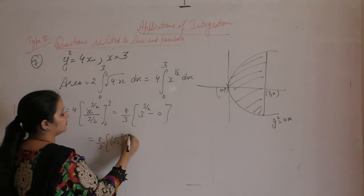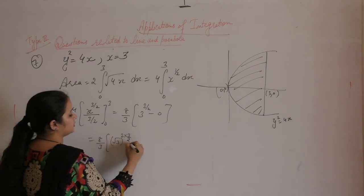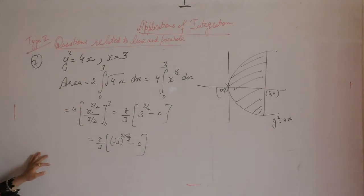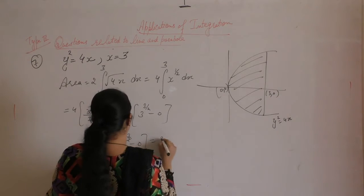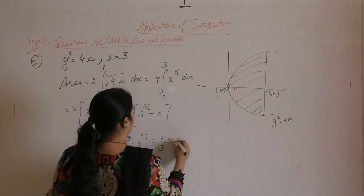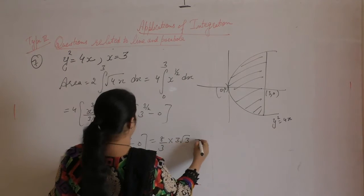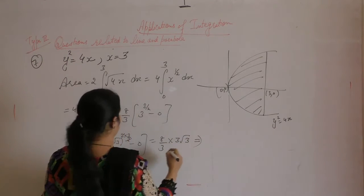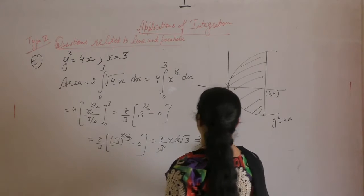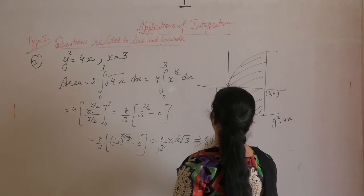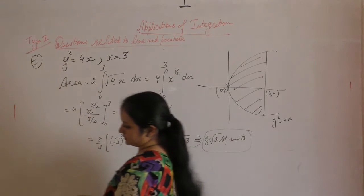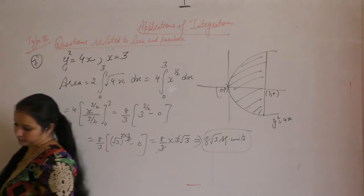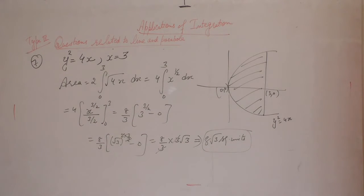Square root of 3 square. Square root of 3 cube is 3 cube 3. Square root of 3. 8 square root of 3 square units.